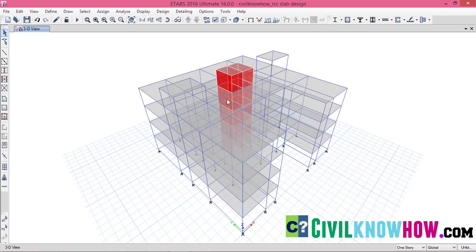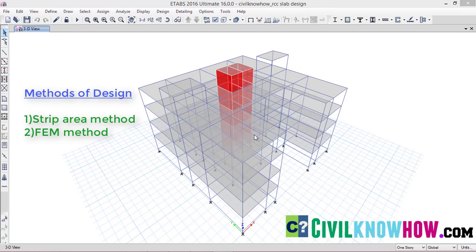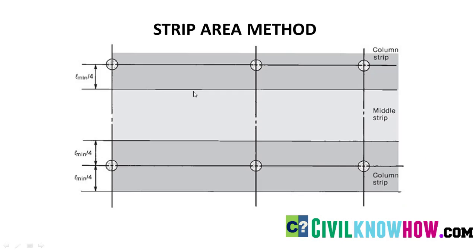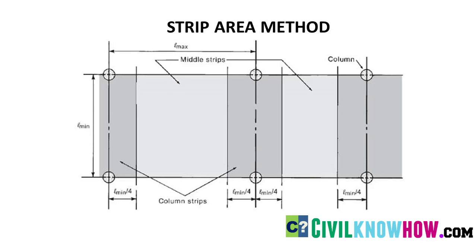After assigning the loads, the next step is to design the slab. In ETAPS, you can design the slab in two methods: the first one is the strip method and the second one is the FEM method. In the strip area method, a slab area is divided into three different strips comprising two column strips and a single middle strip. This slab area is divided into two column strips — coloured in grey — having a width of L-minimum divided by 4, where L-minimum is the length of the shorter span of the slab. The remaining area at the middle is known as the middle strip. Similarly, we define strips for the same slab area along the opposite direction, dividing the slab into strips along both X and Y axes.